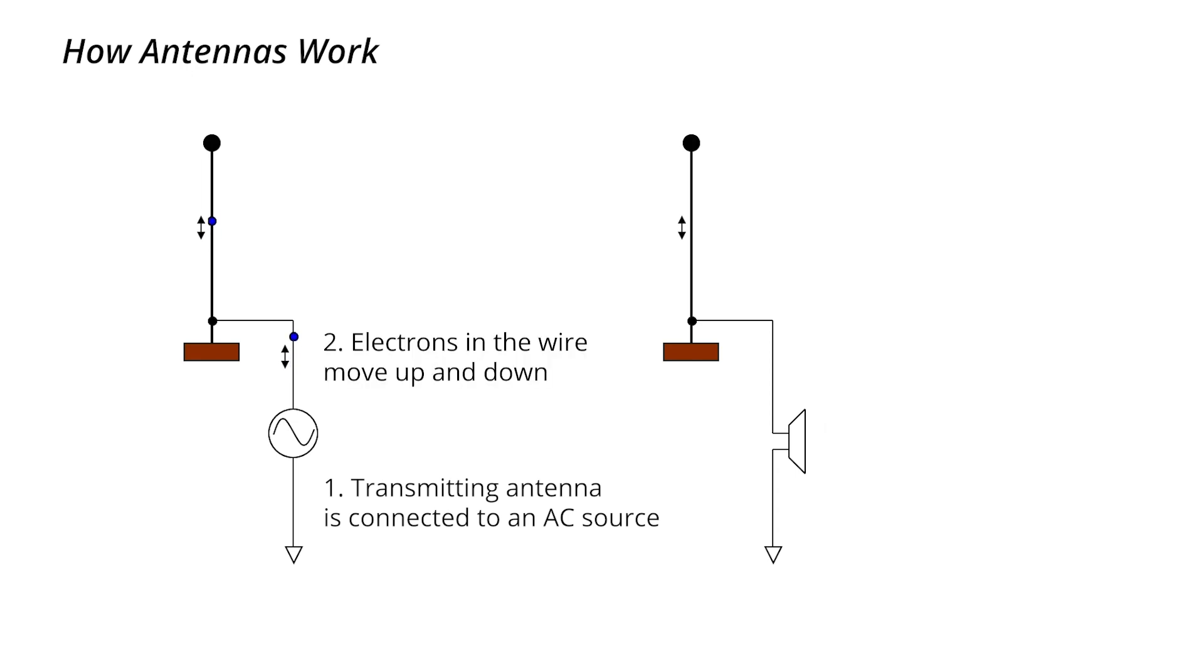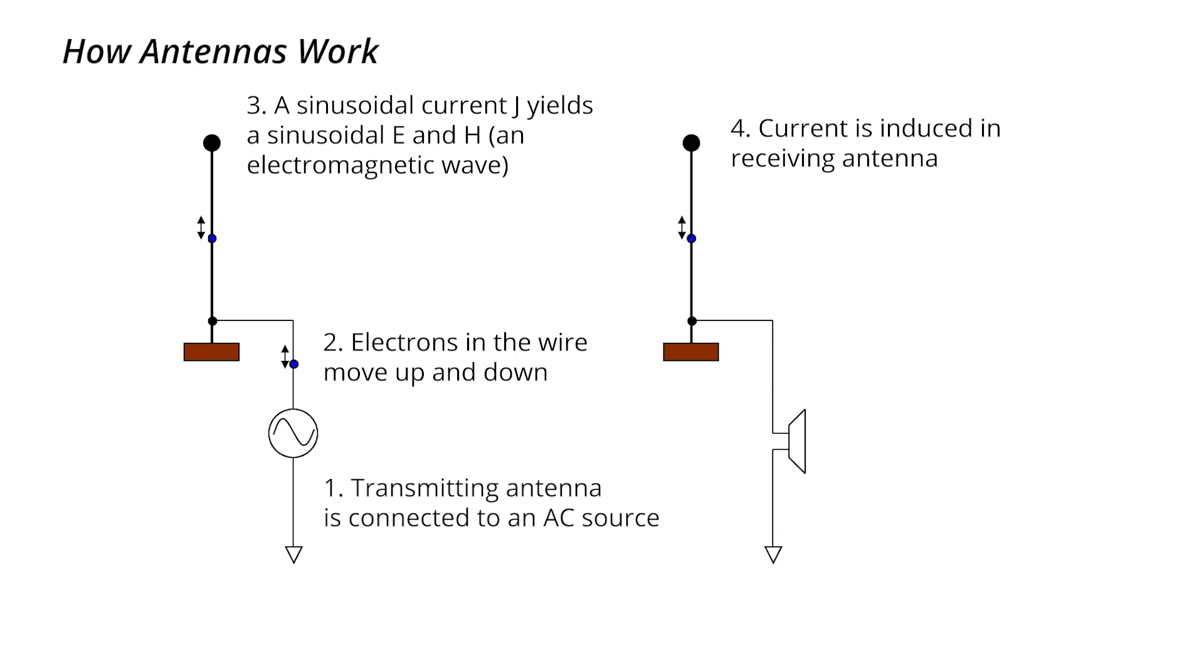So if we have a wire and we jiggle the electrons up and down, then the electric field is also jiggling. The current is not constant. So as that electromagnetic wave expands throughout space, it could intersect another wire, for example, and cause the electrons in the other wire to start varying up and down as well. So you can induce a time-dependent current flow in another wire somewhere else in space. And this is how radios work.